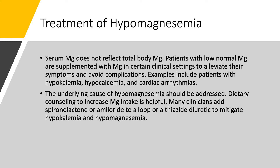We should address the cause of hypomagnesemia. If there's dietary deficiency, we should counsel the patient. If the patient is on a thiazide or loop diuretic, it's frequently very helpful to add amiloride or spironolactone, because those are not just potassium-sparing diuretics but also magnesium-sparing diuretics. This way, you don't have to supplement extra magnesium or potassium, or at least you can cut down on supplementation.